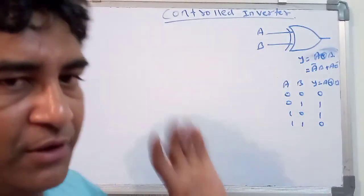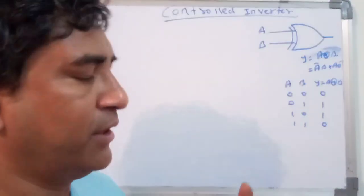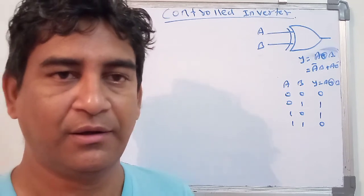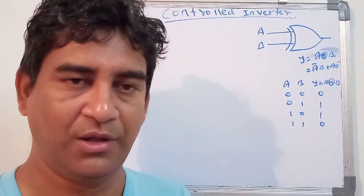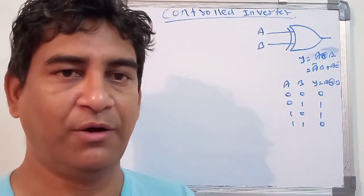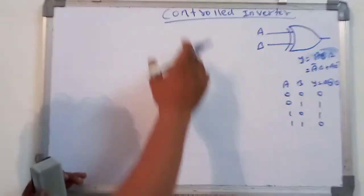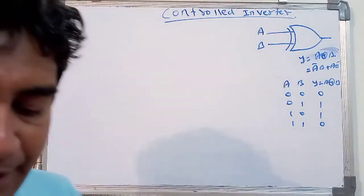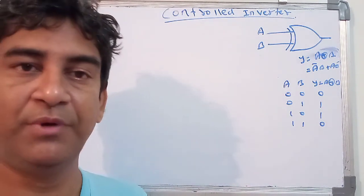Now in this controlled inverter, the inverter means that wherever we are giving the input that is high or low, the output will be fluctuated — that is from high to low and low to high. In this controlled inverter, an 8-bit register is going to be considered.